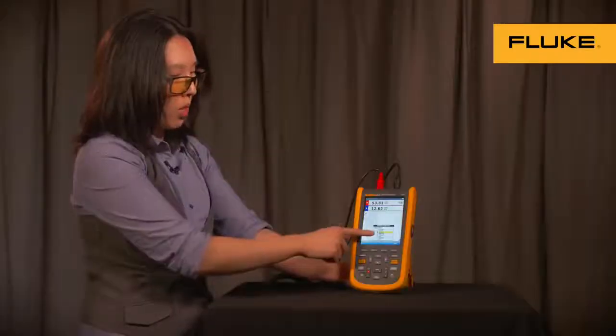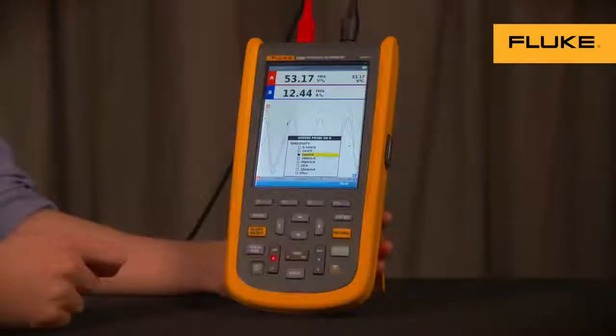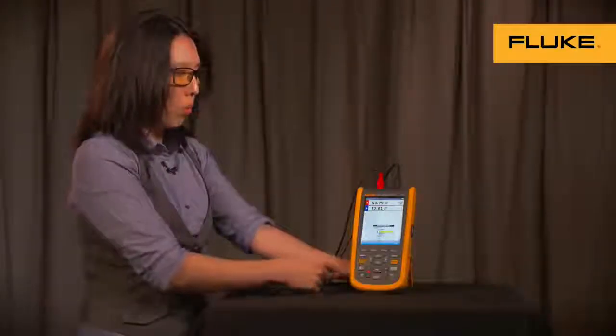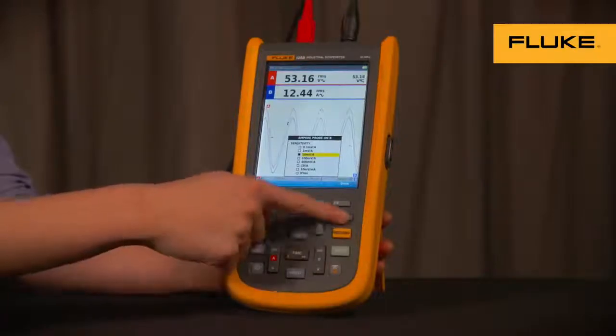For initial setup, make sure you select the right sensitivity for your probes. So in this example, we have the AC current clamp switched to 10 mV per amp, which is highlighted here already. Press the Enter key.